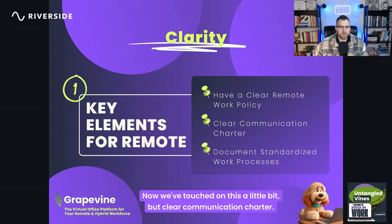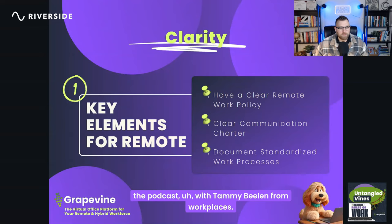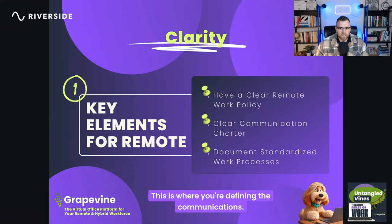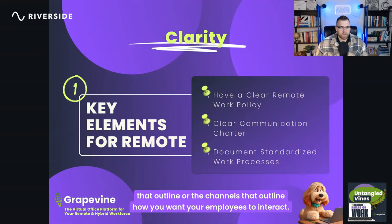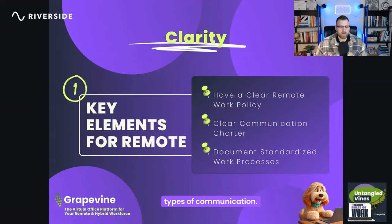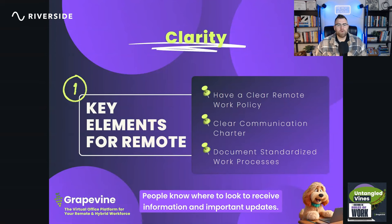The second element is a clear communications charter. I first learned of a communications charter during my podcast interview with Tammy Bjelland from Workplaceless. A communications charter defines the channels that outline how you want your employees to interact — outlining preferred channels, response times, and guidelines for various types of communication. This helps streamline communication and avoid misunderstandings; people know where to look to receive information and important updates.